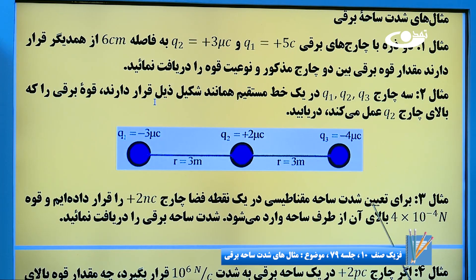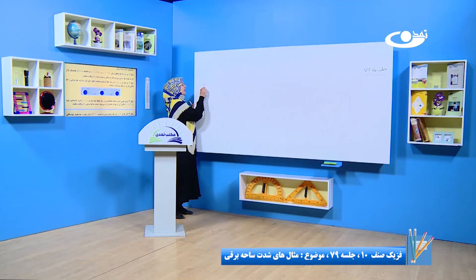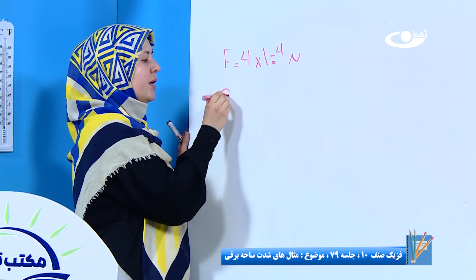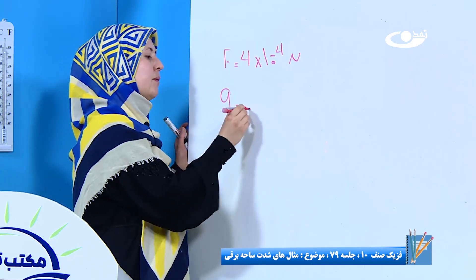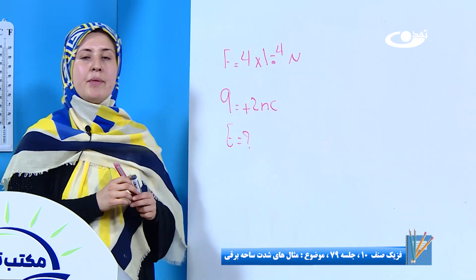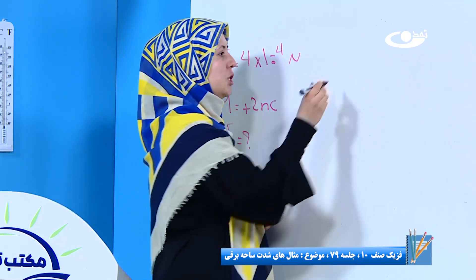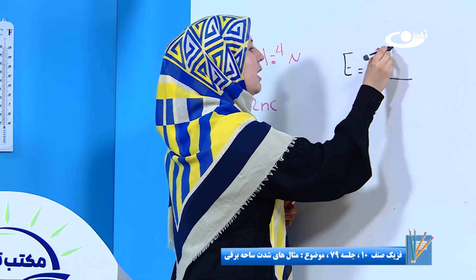بریم سراغ سوال سوم. مثال سوم برای ما گفته: برای تعیین شدت ساحه مغناطیسی در یک نقطه فضا، چارج مثبت دو نانو کولمب را قرار دادیم و قوه را برای ما گفته ۴ ضرب ۱۰ به توان منفی ۴ نیوتن. از ما شدت ساحه را می‌خواد. برای پیدا کردن شدت ساحه بر یک ذره چارج‌دار ما رابطه را داشتیم: E مساوی هست با F بر Q.